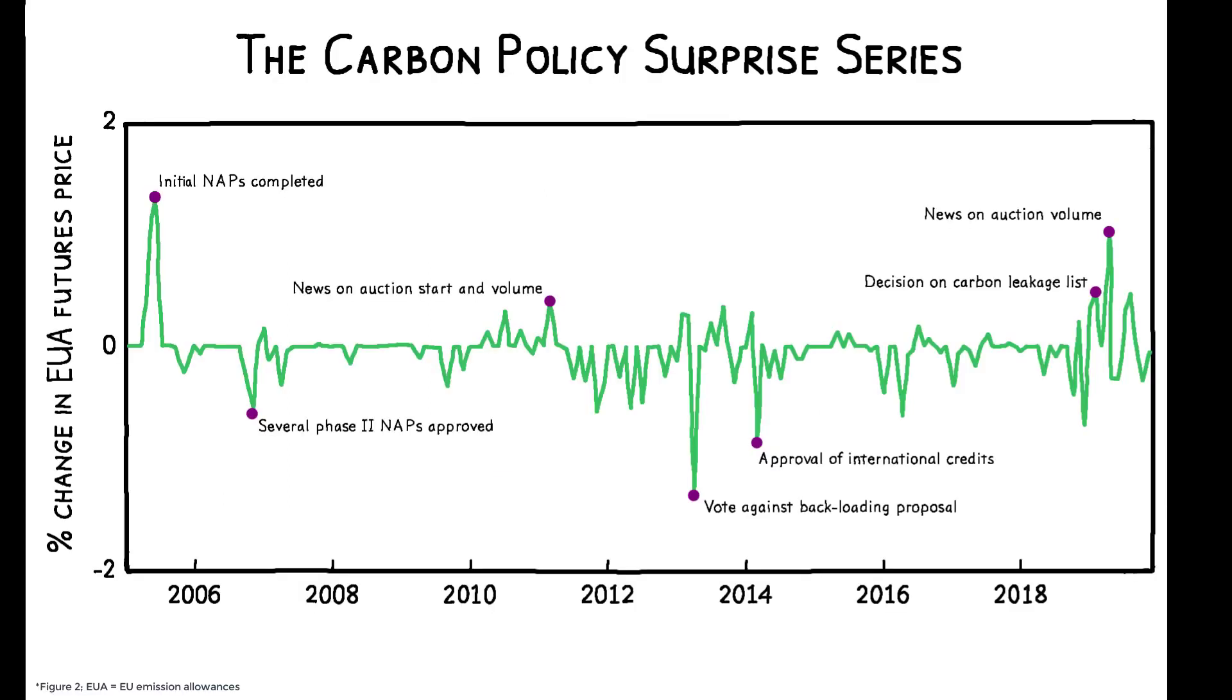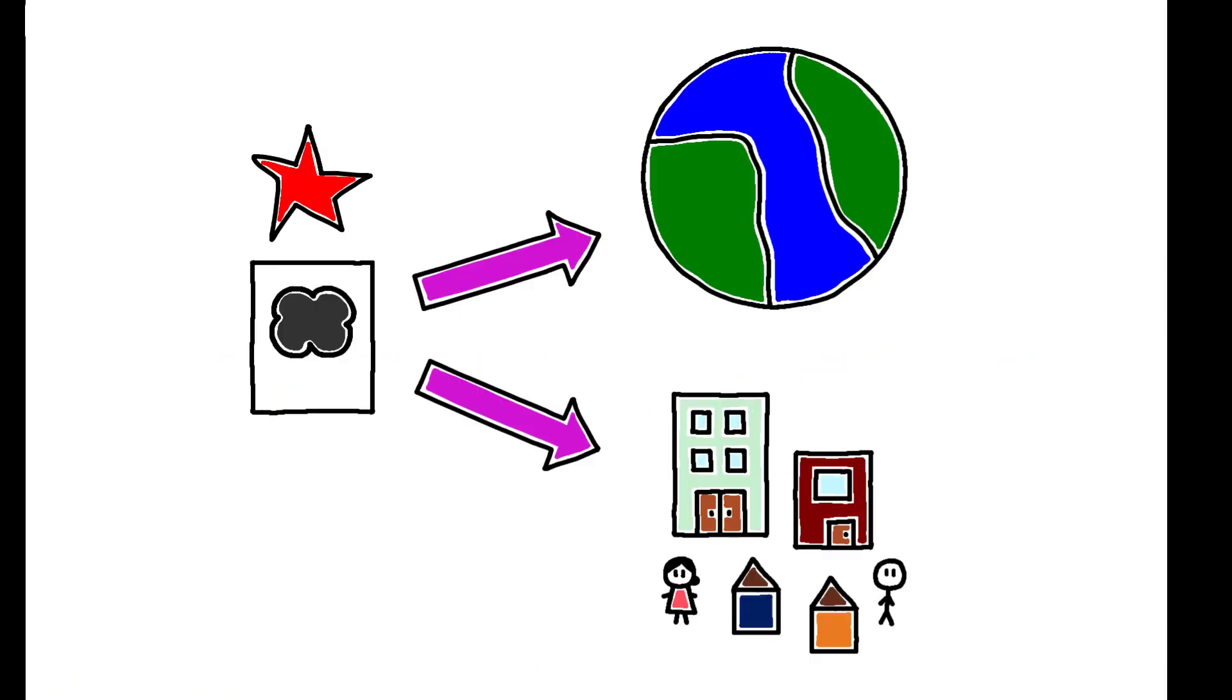The idea is that doing so isolates a series of carbon policy surprises, as measured by the sudden change in carbon prices driven by each regulatory update. So, how do carbon policy shocks affect environmental and economic outcomes?